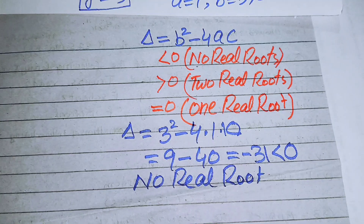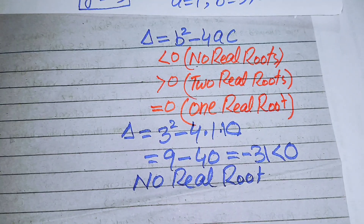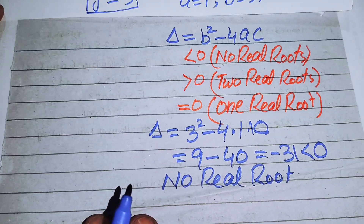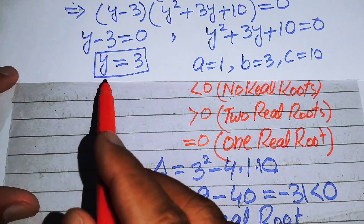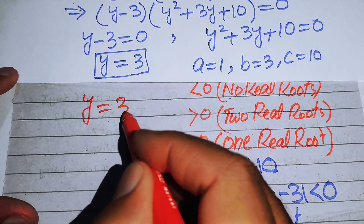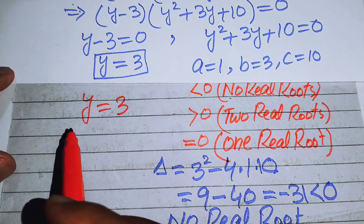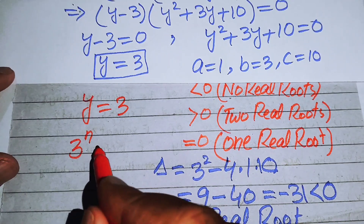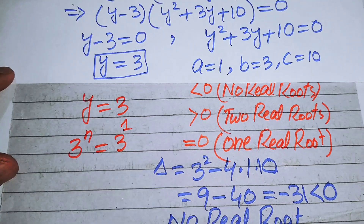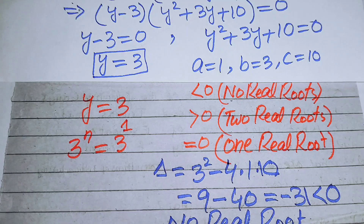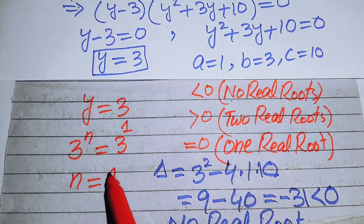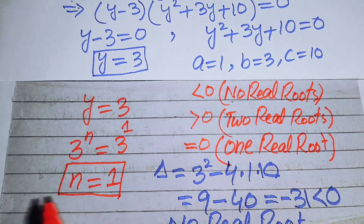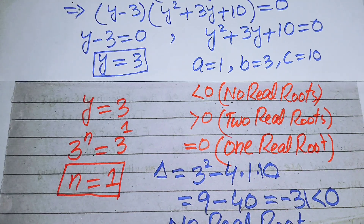Since the quadratic has no real roots and we need real solutions only, we reject that case. Going back to y equals 3 and substituting y equals 3 to the power of n, we get 3 to the power of n equals 3 to the power of 1. Since the bases on both sides are the same, the exponents must be equal, giving us n equals 1 as our final answer. Thank you for watching — please subscribe for more videos.